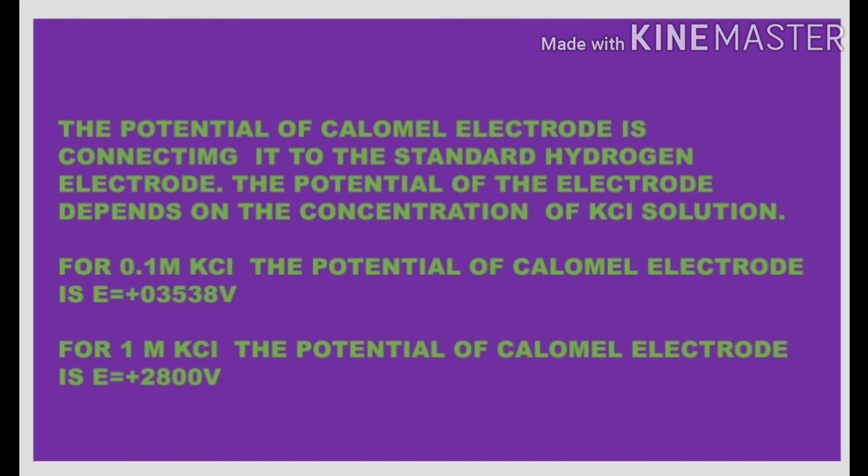The potential of the calomel electrode is determined by connecting it to the standard hydrogen electrode. The potential depends on the concentration of the KCl solution. For 0.1M KCl, the potential of the calomel electrode is +0.3538V, whereas for 1M KCl solution, the electrode potential is +0.2800V.